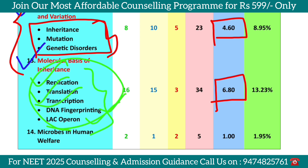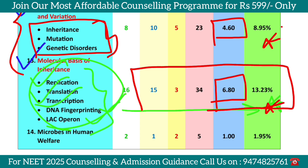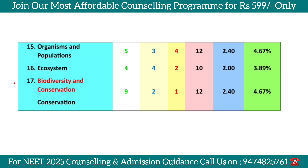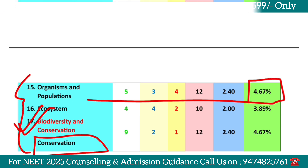This chapter carries high weightage. The assertion and reason-based questions are basic questions. Statement-based questions are also basic. Biodiversity and Conservation, and Organisms and Populations are important. These chapters are easy ones.